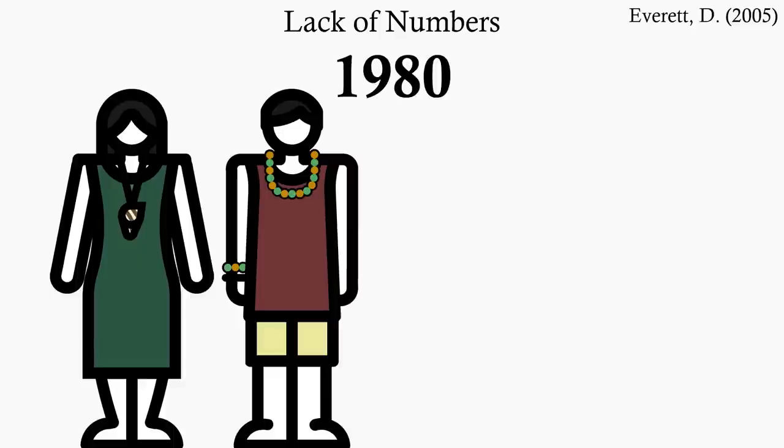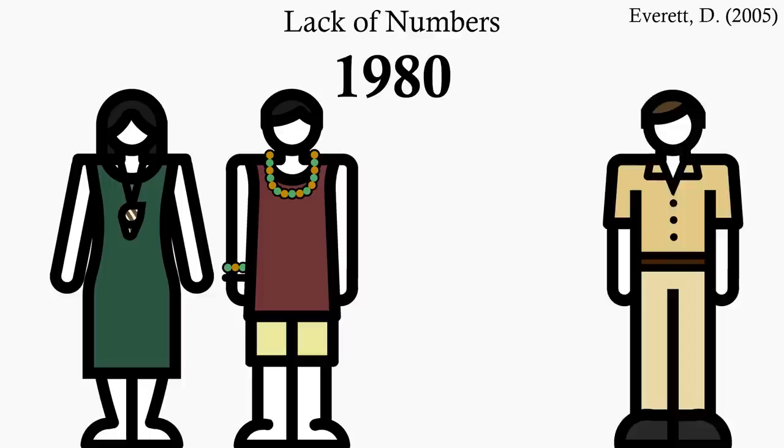In 1980, scared that they were being cheated when trading with outsiders, the Pirahã insisted that Everett and his wife teach them how to count. But while that's going on...